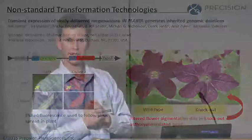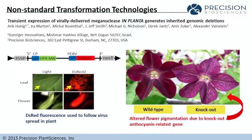The final example I'll describe is a non-standard transformation method that was used to utilize this technology. This is a collaboration between Danzinger Innovations in Israel and Precision Biosciences. The method that was used here was to transiently express a virally-derived meganuclease in planta, in this case petunia, to generate inherited genomic deletions. So this is a different way of delivery. What was used was a tobacco rattle virus vector, which contains a meganuclease and a DS red marker gene. That virus is used to infect petunia plants, and they can follow the infection process by looking at where DS red fluoresces in the plant. Due to the expression of this meganuclease, they were able to knock out one of the genes that controls anthocyanin pigmentation.